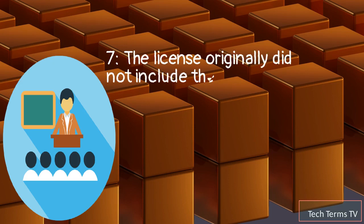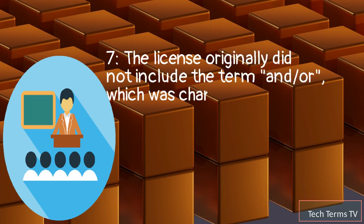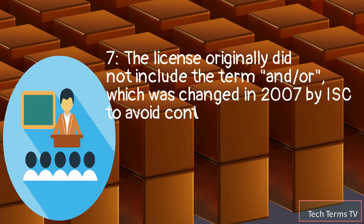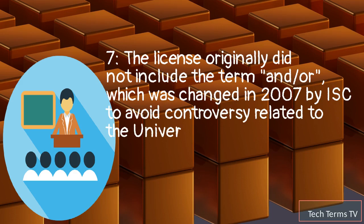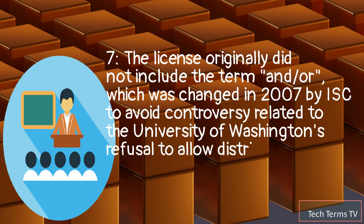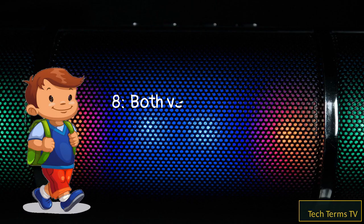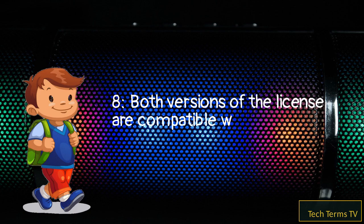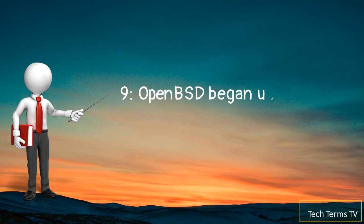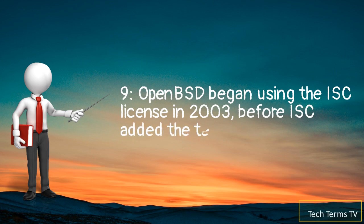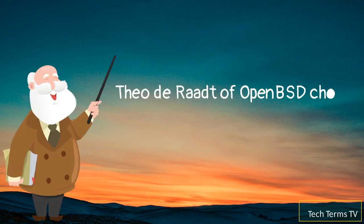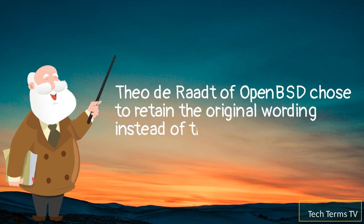The license originally did not include the term "and/or," which was changed in 2007 by ISC to avoid controversy related to the University of Washington's refusal to allow distribution of the PIN email software. Both versions of the license are compatible with the GNU GPL. OpenBSD began using the ISC license in 2003, before ISC added the term "and/or." Theo de Raadt of OpenBSD chose to retain the original wording instead of the changed version.